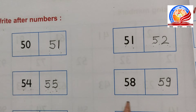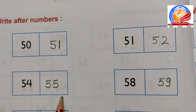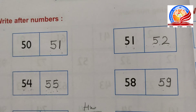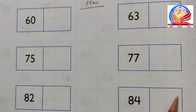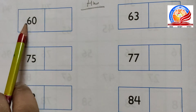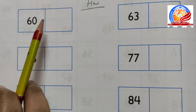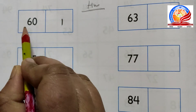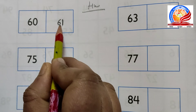Yahan maine aapko 4 after numbers nikalna aur likhna samjhaya aur ek nayi trick bhi batai. Jo yeh niche diya gaya hai, yeh aapko aise hi bol bol kar likhna hai - yeh aapka HW hai. Jaise humein yahan 60 diya gaya hai toh 0 ke baad mein 1 aata hai, aur yeh 6 ki line hai isliye 6 toh likhna hi hai - toh yeh ho gaya 61.